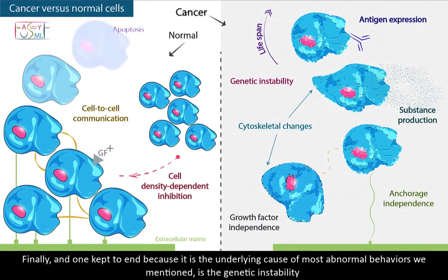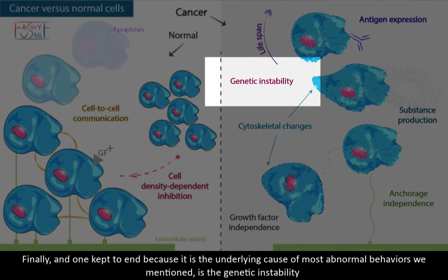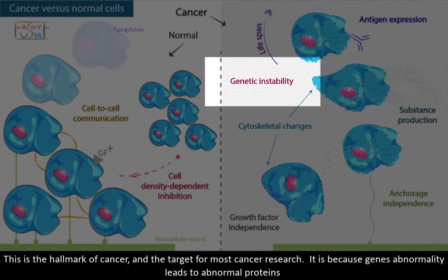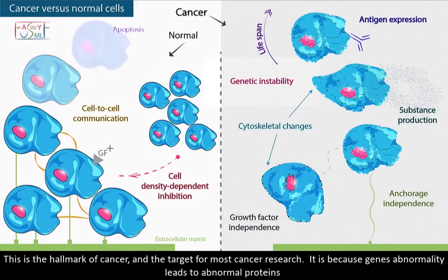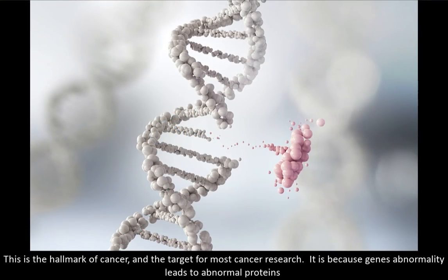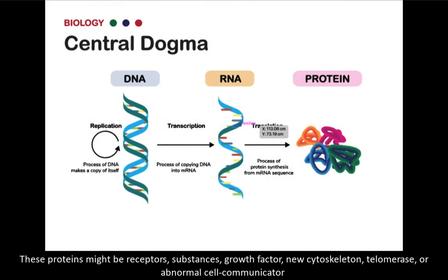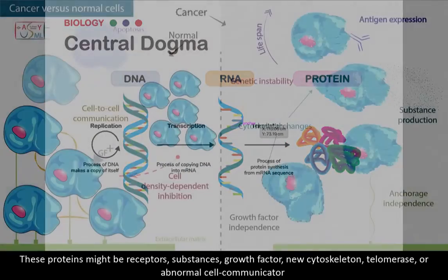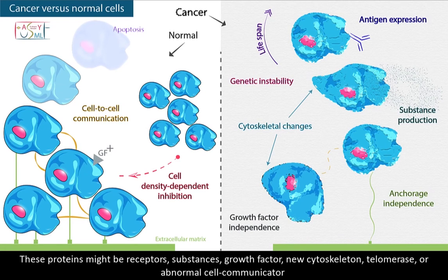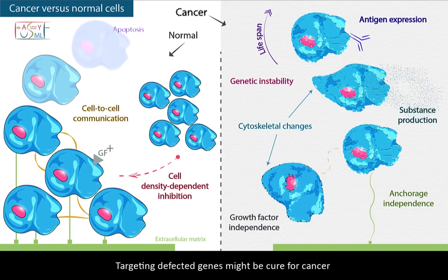Finally, and kept to the end because it is the underlying cause of most abnormal behaviors mentioned, is genetic instability. This is the hallmark of cancer and the target for most cancer research. Gene abnormalities lead to abnormal proteins, which might be receptors, substances, growth factors, new cytoskeleton components, telomerase, or abnormal cell communicators. Targeting defective genes might be a cure for cancer.